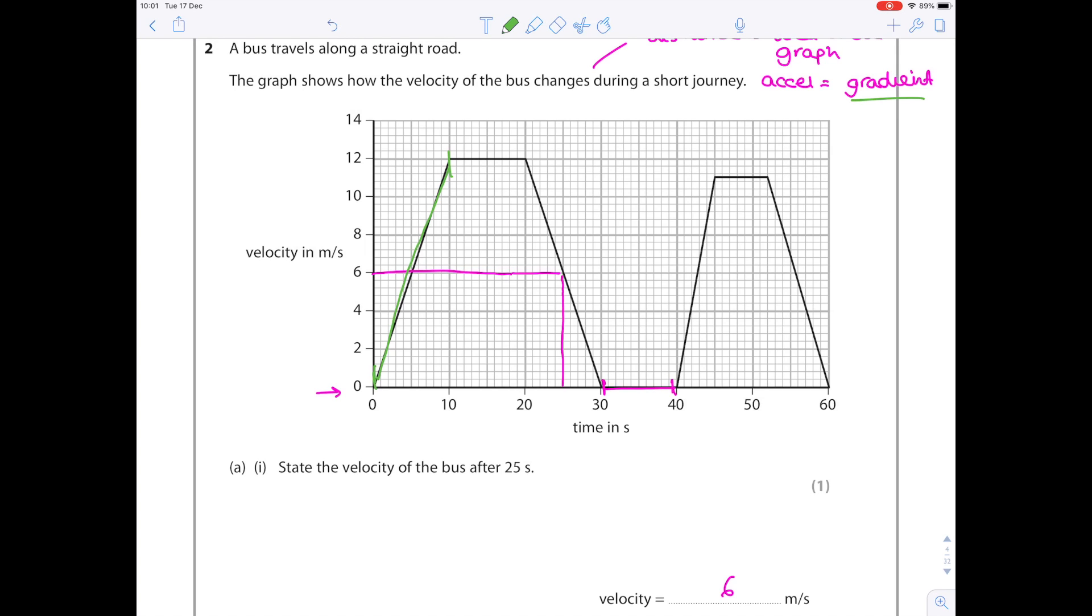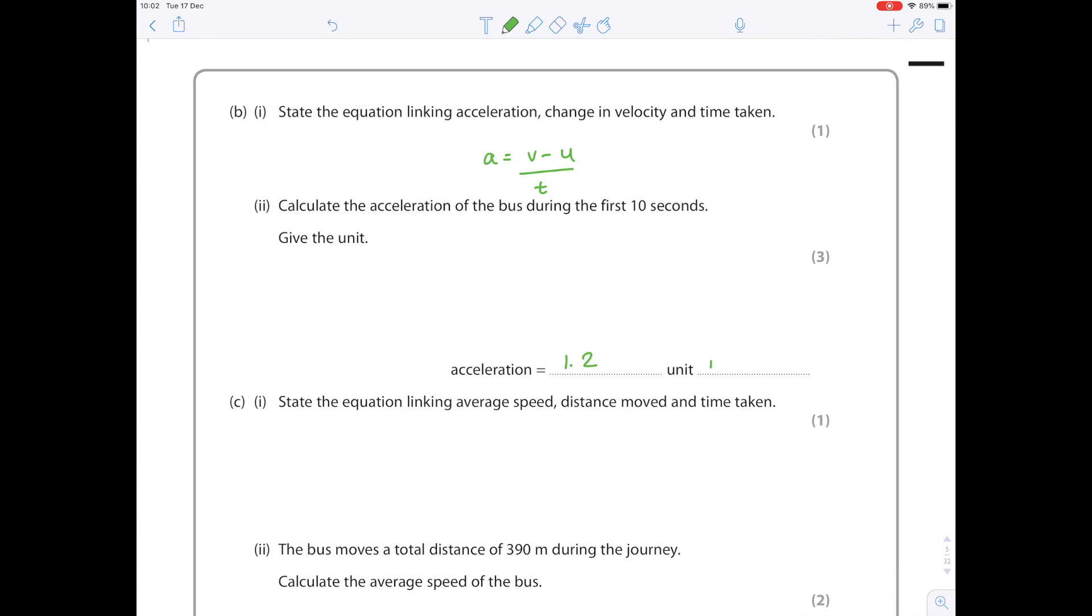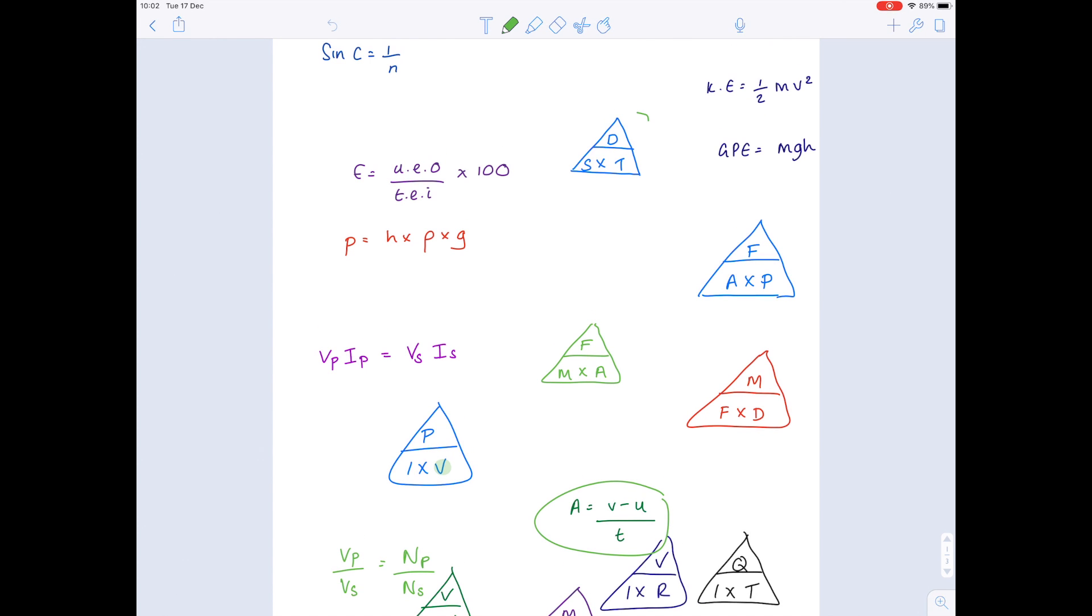So the first 10 seconds is this line along here. It's changing speed over time. I've already set up that it's calculated by doing the gradient. How do we find the gradient? We do change in y over x. The change in y is 12, the x value is 10, so 12 divided by 10 is 1.2. Remember the unit here is meters per second squared.